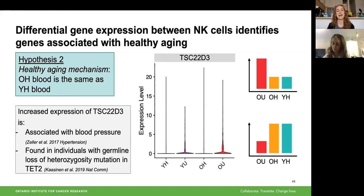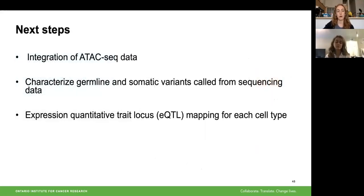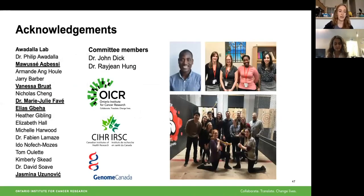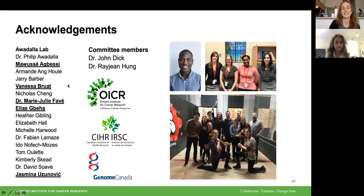This gives you an example of how we're using this data and looking for these types of patterns to identify what's contributing to healthy aging in blood. In the future, we've done ATAC sequencing on the same individuals, so we'll be looking to integrate that data to understand what may be regulating these changes in gene expression, as well as looking at both germline and somatic variation and using those variants to do eQTL mapping. I'd like to acknowledge my lab, especially the individuals highlighted here who contributed to this work, as well as our funding sources. Thank you.